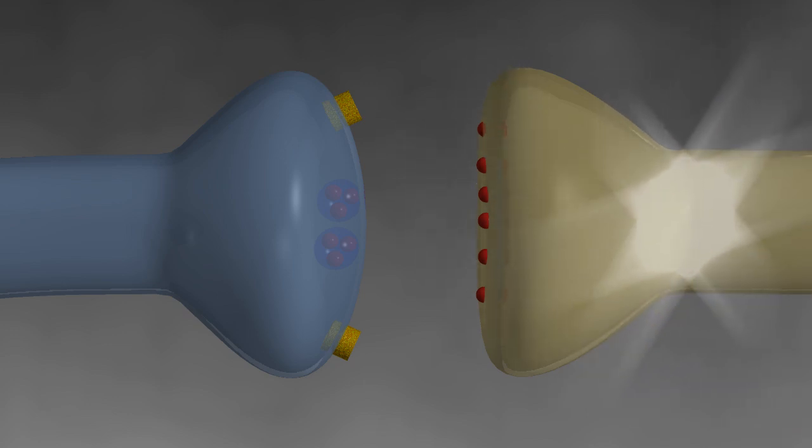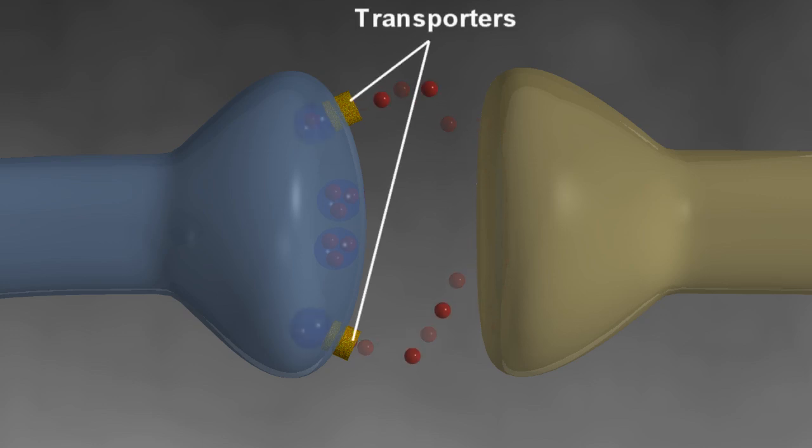To stop the neuron from firing continuously, the chemicals are broken down or degraded and eliminated from the body or, more likely, brought back up into the first neuron and recycled via transporters on the presynaptic cleft.